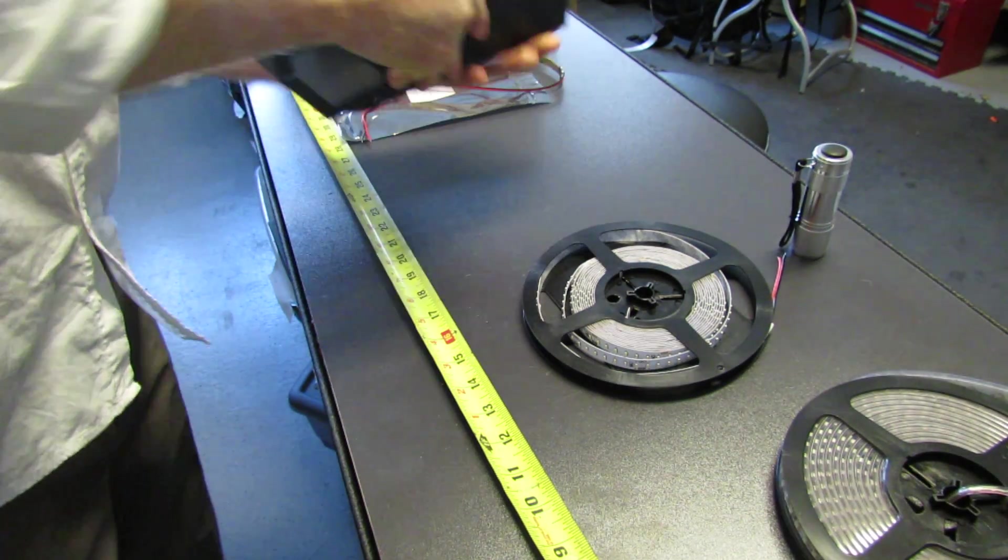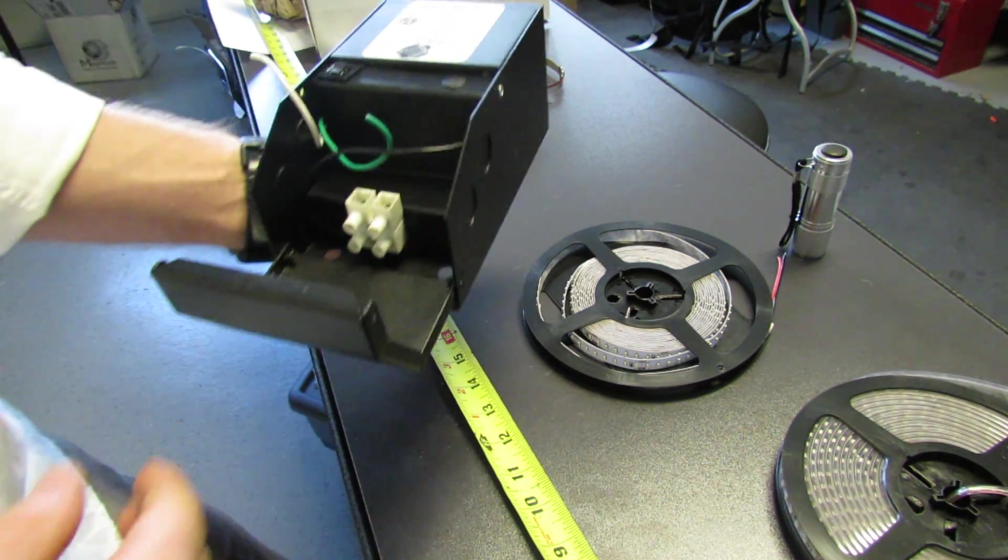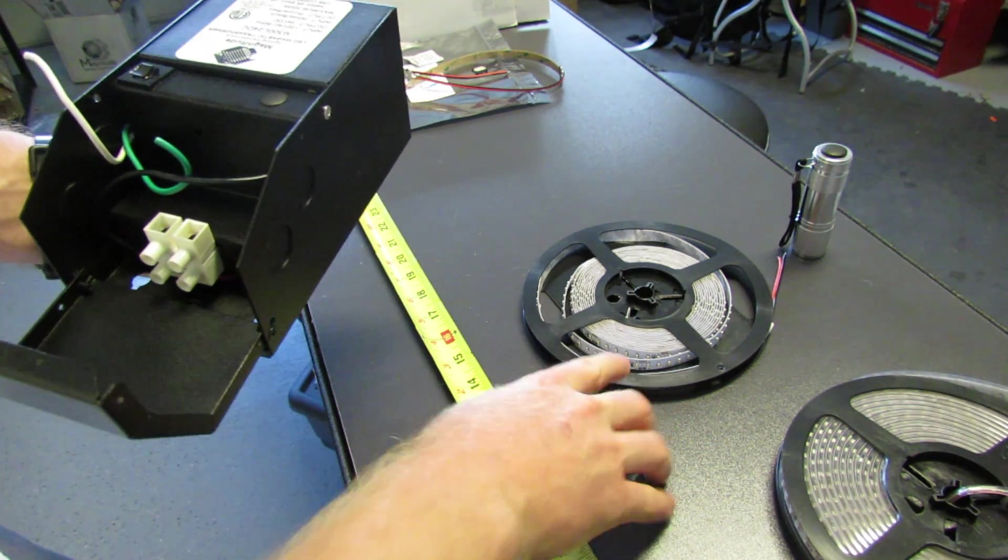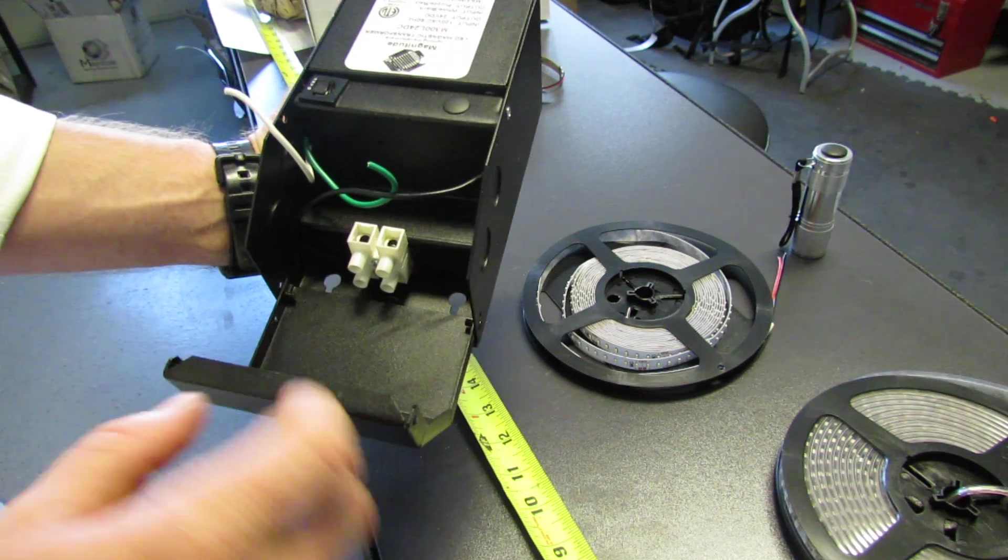The transformer here, 300 watt, you can wire three strips of the 24 volt ultra bright to this here.